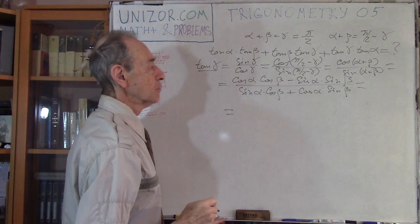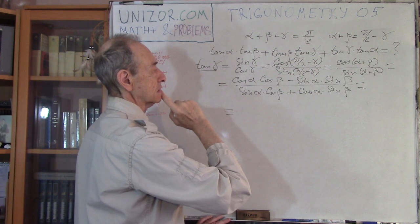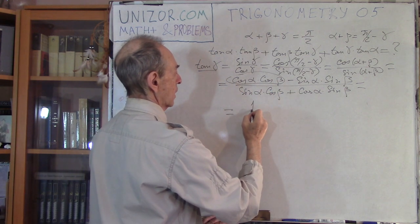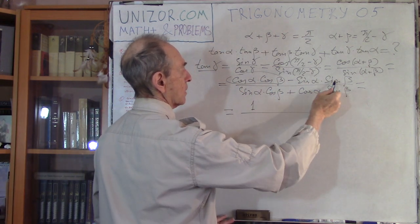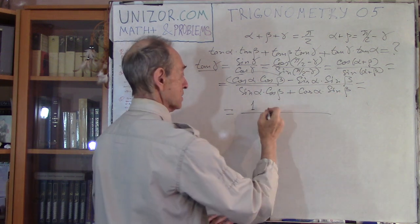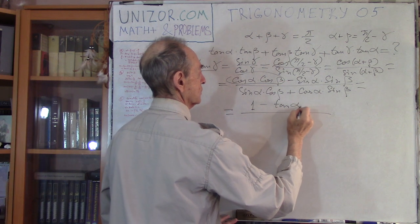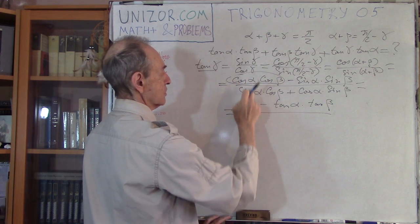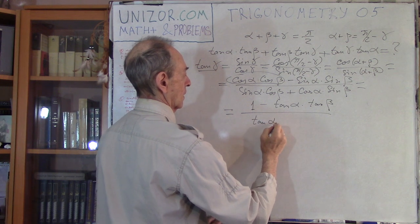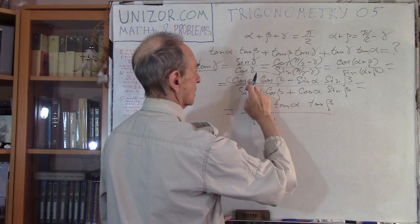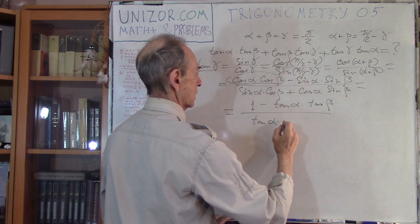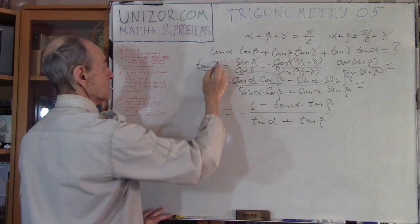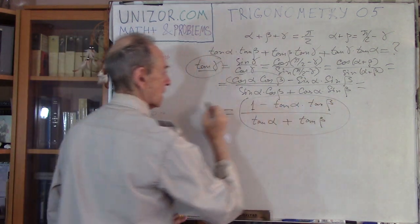I will simplify it further by dividing both numerator and denominator by the product of cosines. If I divide, I will have: one minus tangent alpha times tangent beta in the numerator, and tangent alpha plus tangent beta in the denominator. So tangent of gamma can be presented as this expression.